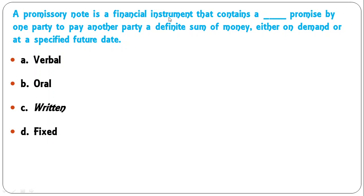A promissory note is a financial instrument that contains a — verbal promise, oral promise, written promise, or fixed — promise by one party to pay another party a definite sum of money either on demand or at a specified future date? A promissory note is a written document — a written promise by one party to another. C is the correct answer.